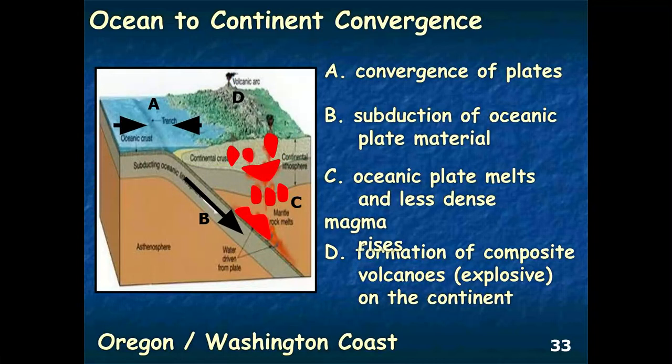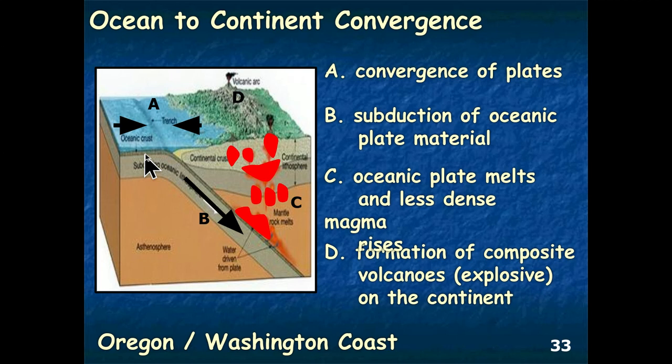In ocean-to-continent convergence, looking at the diagram labeled a, b, c, and d, point A characterizes the hinge point where one plate converges with another. At point A forms what we call a trench — a deep depression on the ocean floor marking the hinge point where one plate moves beneath another. Some trenches are so deep that scientists have difficulty accurately measuring their depth.